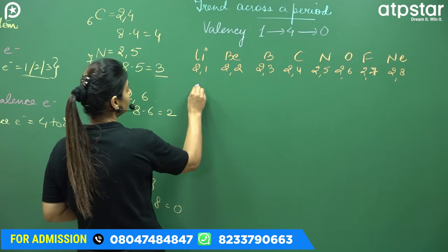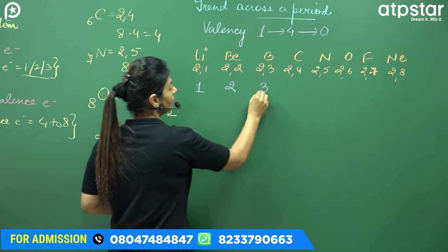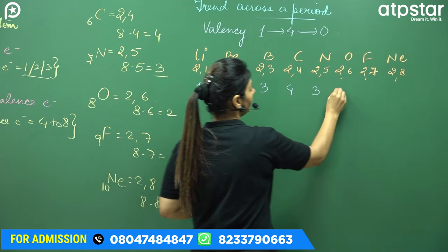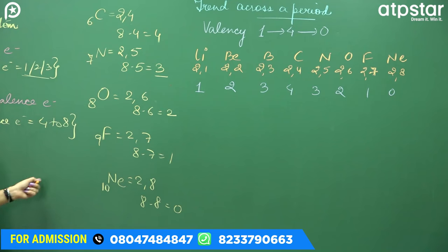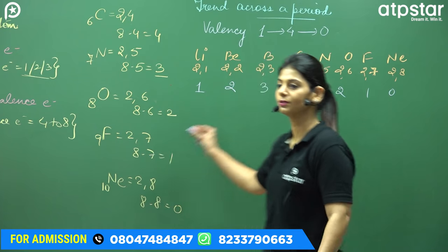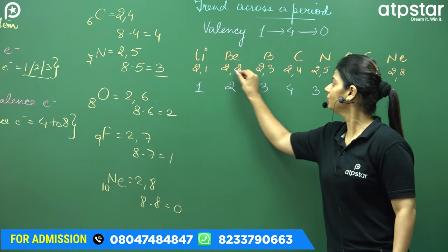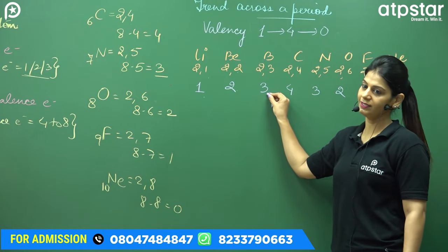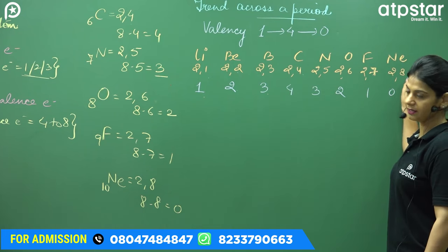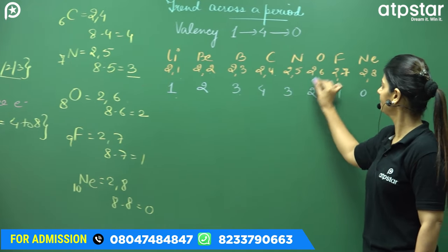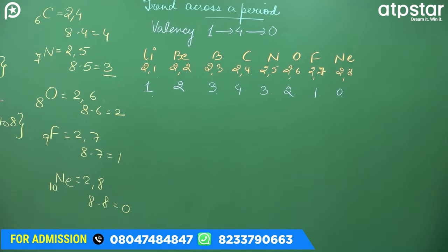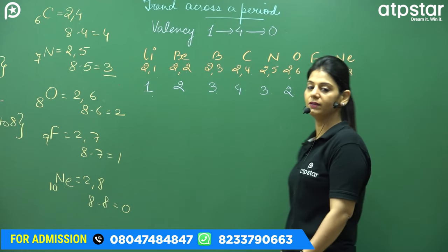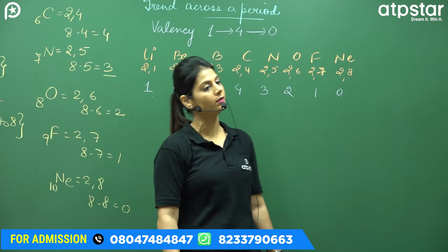Now the valency values: Li=1, Be=2, B=3, C=4, N=3, O=2, F=1, Ne=0. The formula is right in front of you. If valence electrons are 1, 2, or 3, the valency is the same number. From carbon onwards, you subtract from 8: 8−4=4, 8−5=3, 8−6=2, 8−7=1, 8−8=0. So across a period, valency increases from 1 to 4, then decreases to 0.